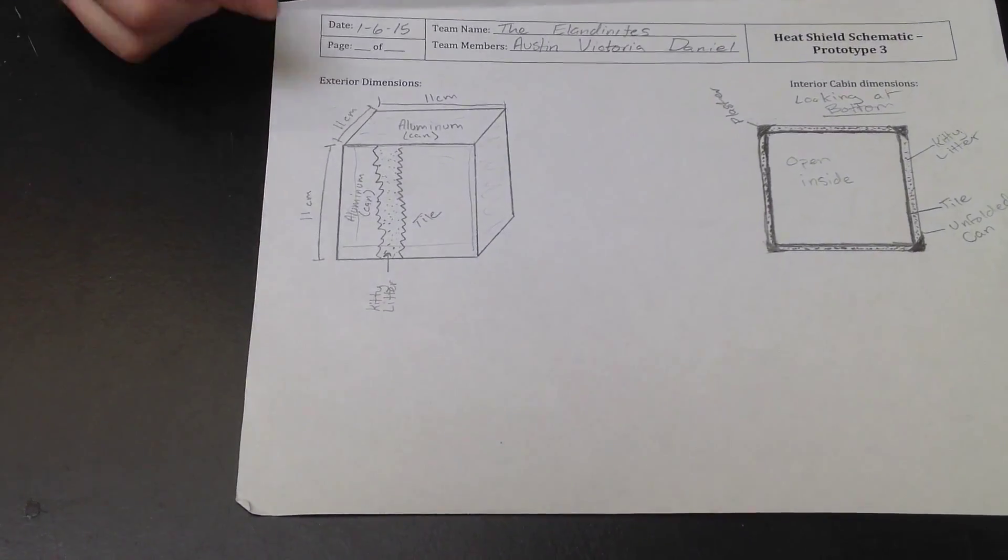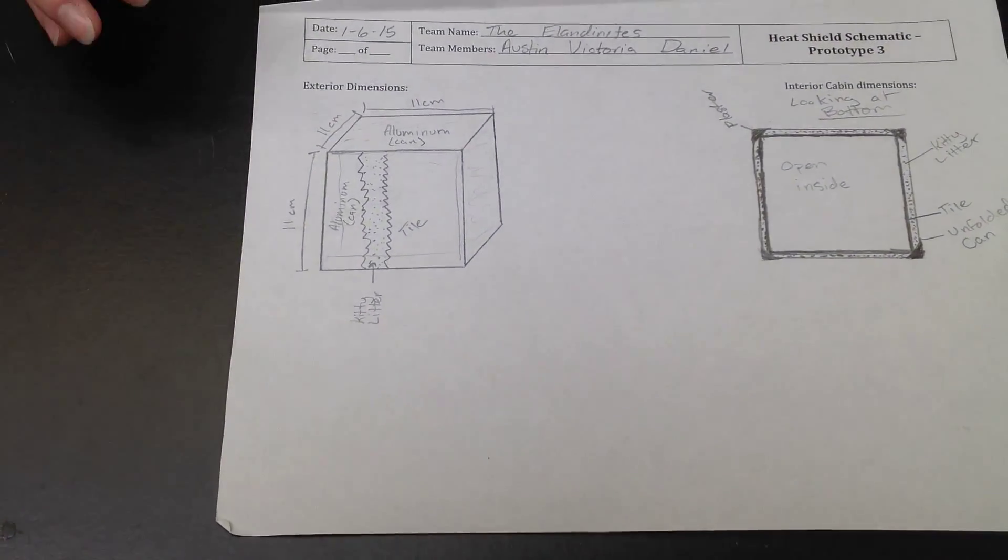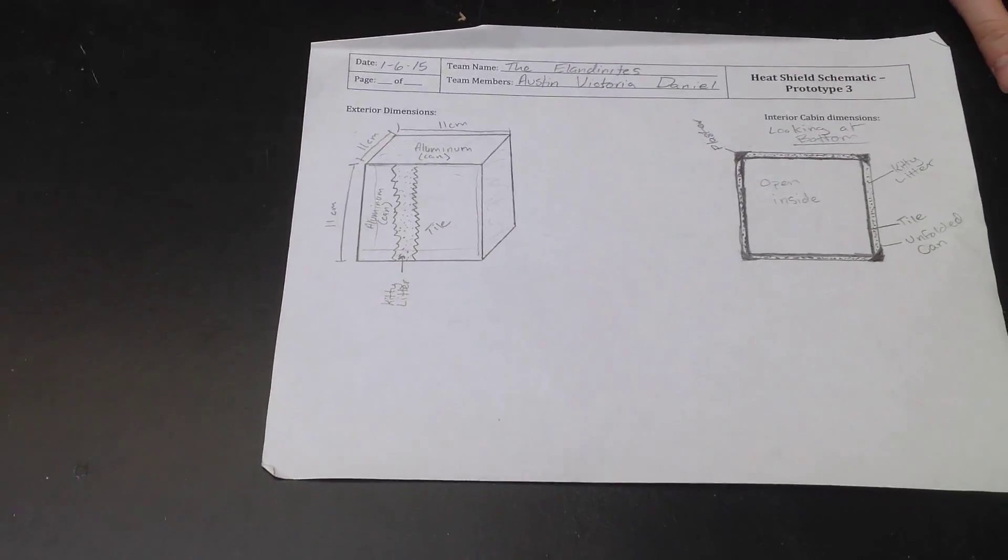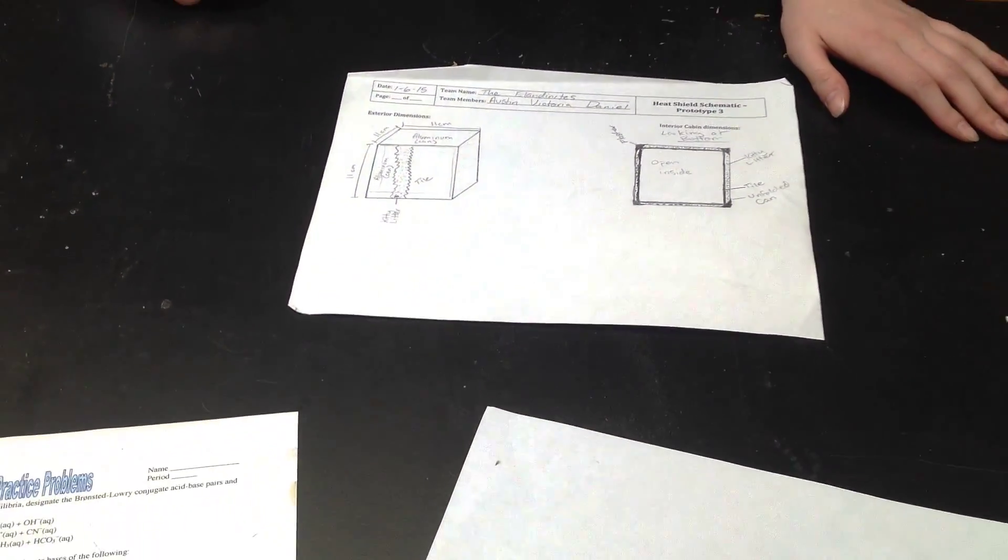This is good because the aluminum foil and insulator will take most of the heat during heat testing, and the infrastructure of ceramic tiles prevents it from breaking during the drop test.